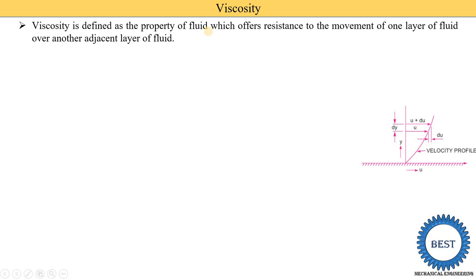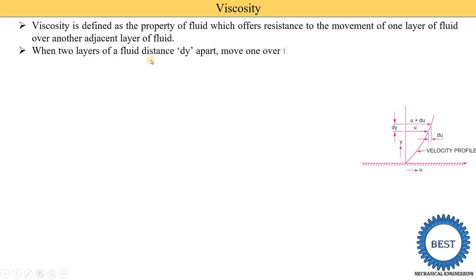For solids, we use the term friction. When there is movement between two solid particles, some friction occurs — for example, when we walk on the road, there is friction between our shoes and the road. Instead of friction, the equivalent word for fluids is viscosity.